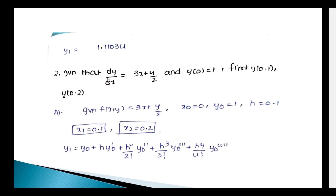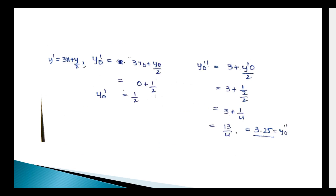Second problem: Given dy/dx = (3x + y)/2 and y(0) = 1, find y(0.1) and y(0.2). Here h = 0.1, x₁ = 0.1, x₂ = 0.2. Using the Taylor series formula: y' = (3x + y)/2, so y₀' = (3x₀ + y₀)/2 = (0 + 1)/2 = 1/2.